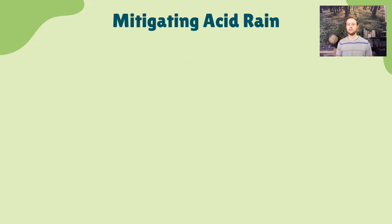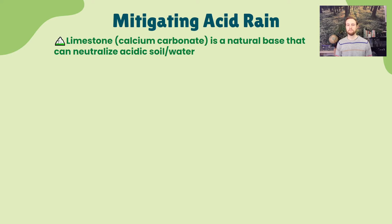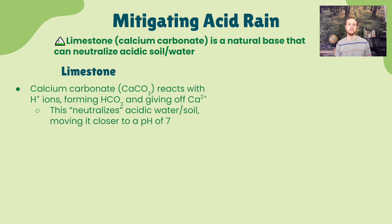Limestone — an important base that occurs naturally in many ecosystems — is a great way to neutralize acidic conditions in soil or water resulting from acid deposition. Limestone is primarily calcium carbonate (CaCO3). When H+ ions are present in a water or soil source, they react with calcium carbonate to form bicarbonate (HCO3−) and release a positively charged calcium ion. This effectively absorbs excess H+ ions and neutralizes — meaning moves the pH closer to 7 — mitigating the effects of acid deposition.